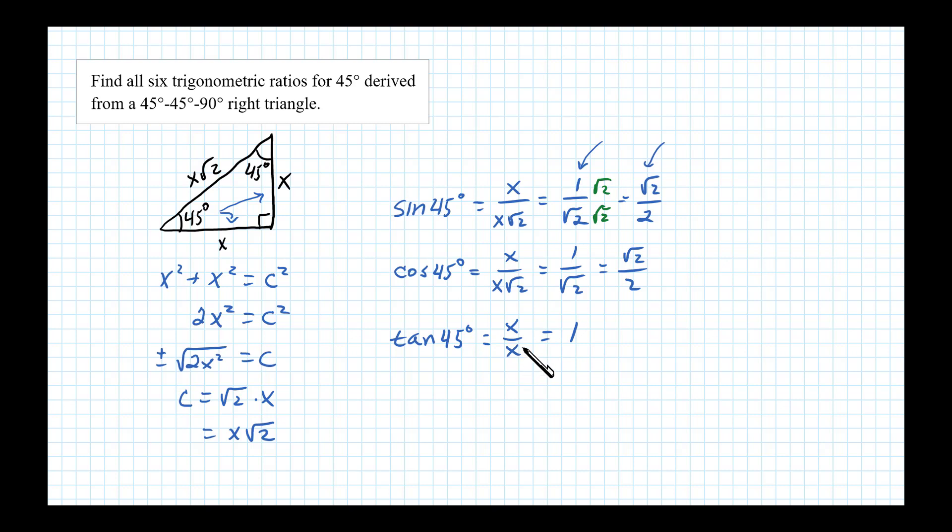Now the other three ratios are the reciprocal. So the reciprocal of tangent is cotangent, so cotangent of 45 is the reciprocal of 1, and that's just 1. The reciprocal of cosine is secant, and the reciprocal of 1 over square root of 2 is just square root of 2.